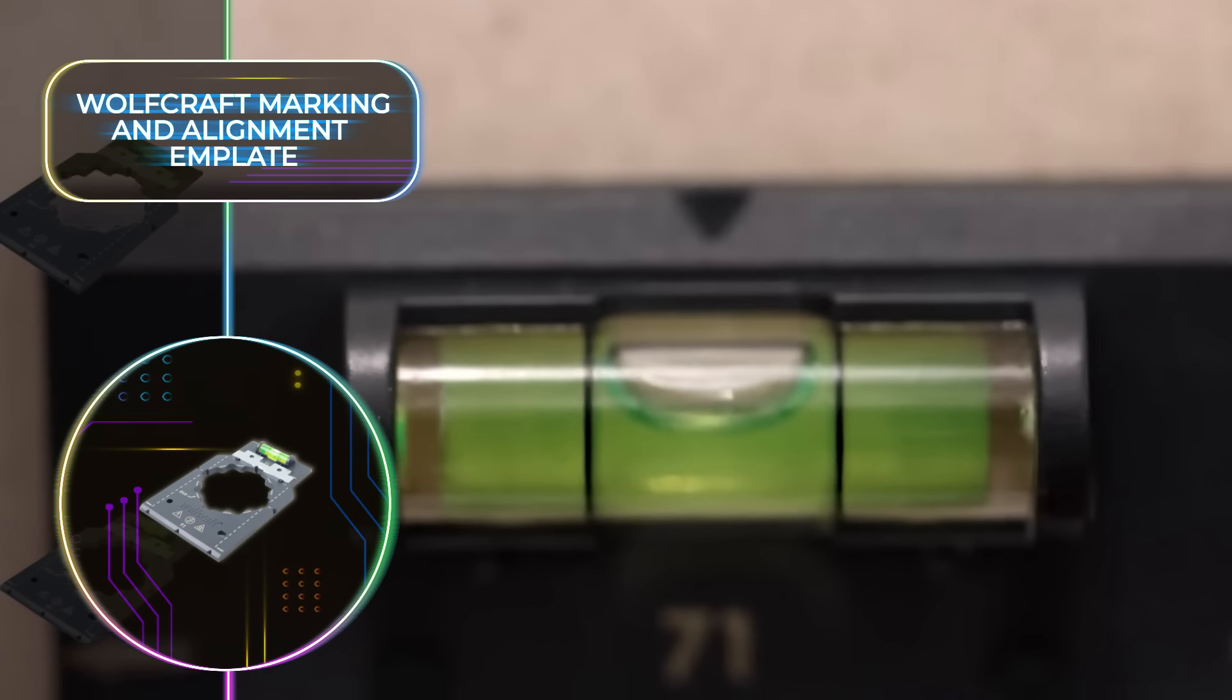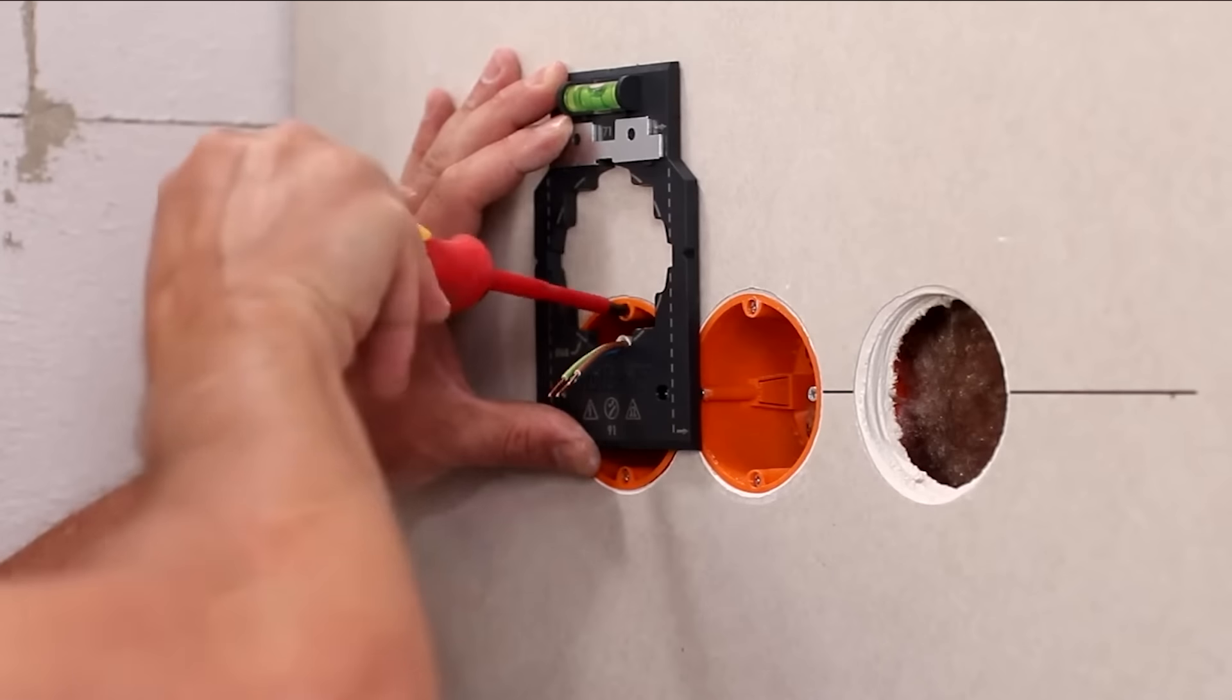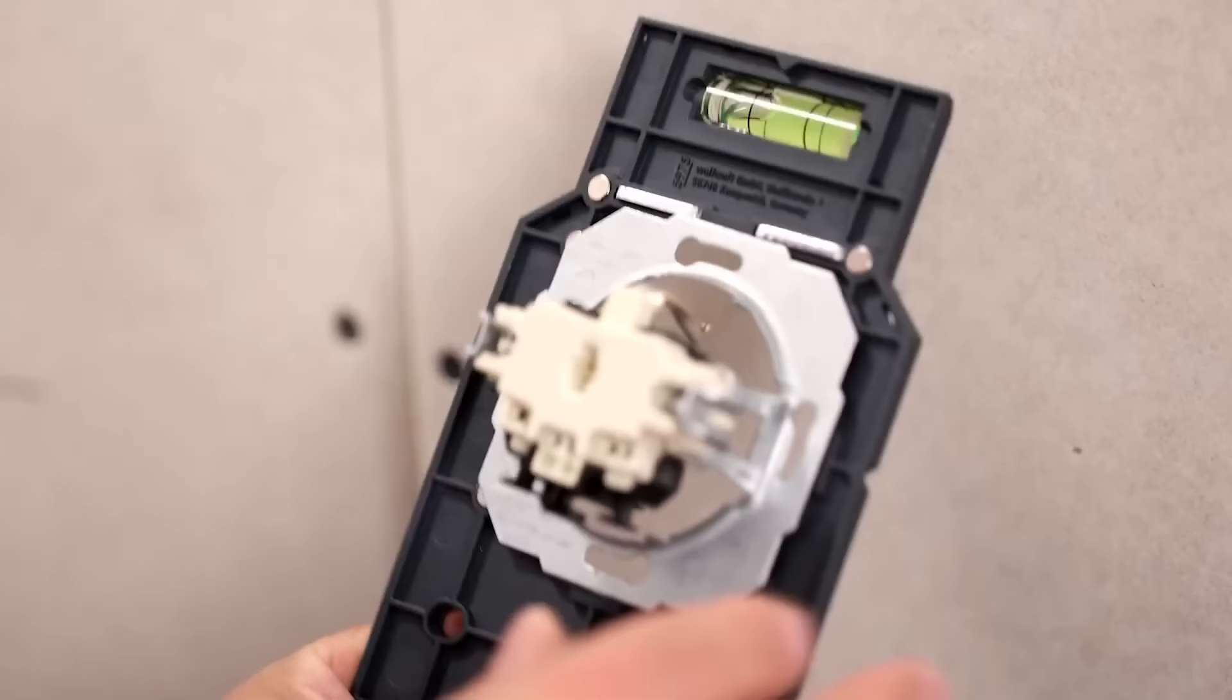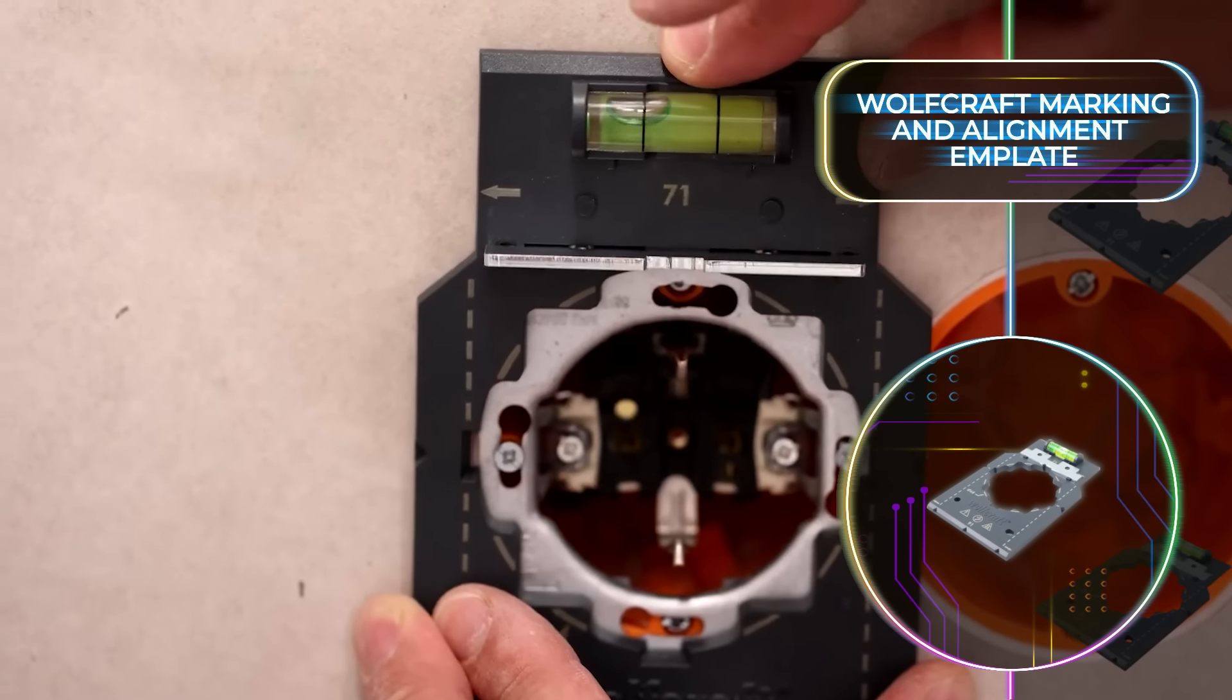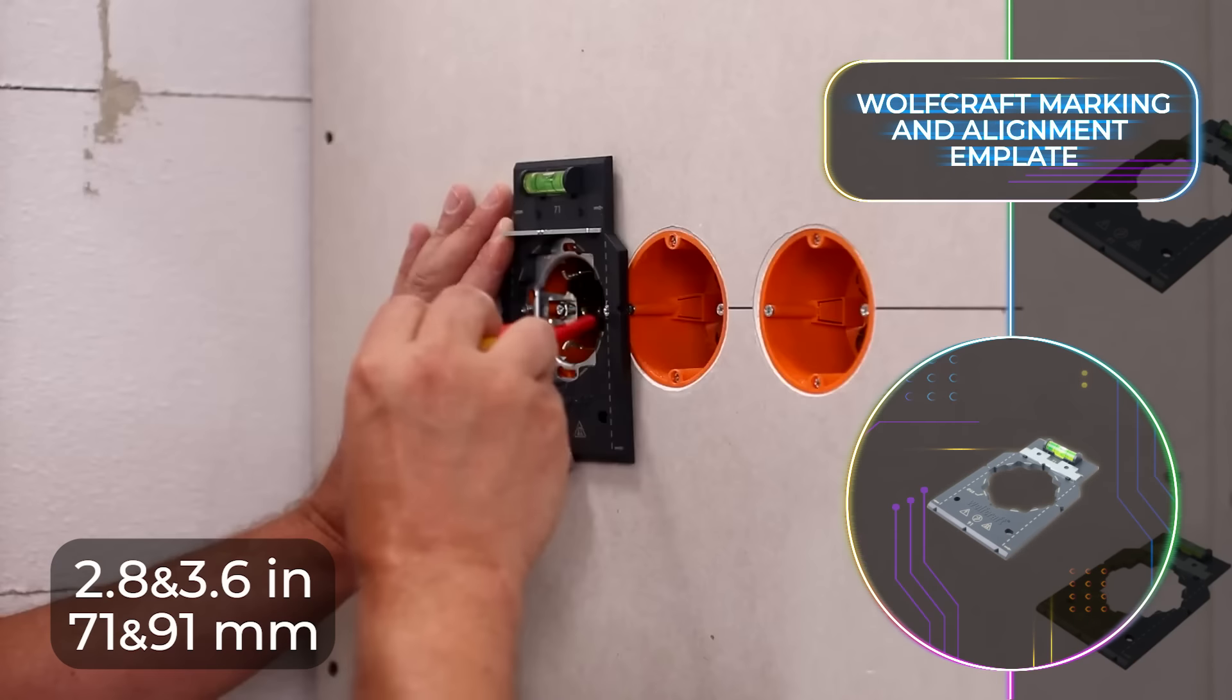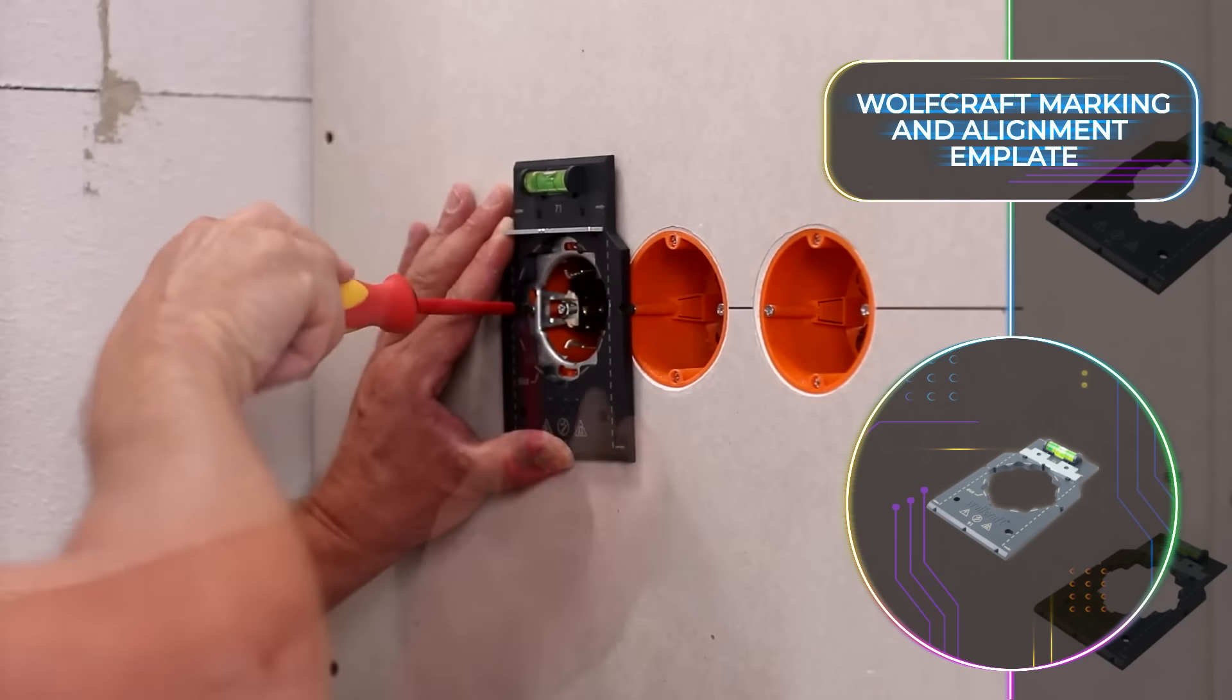It's also equipped with an integrated spirit level, so absolute precision is guaranteed, and comes complete with easy-to-follow step-by-step illustrated instructions. The universal design offers many different ways to handle the unique socket insert designs found in different countries, and it has a working length of either 2.8 or 3.6 inches or 71 and 91 millimeters. Despite its multitude of features, the price remains surprisingly affordable at just $16.